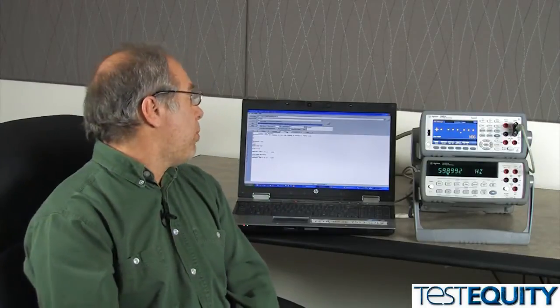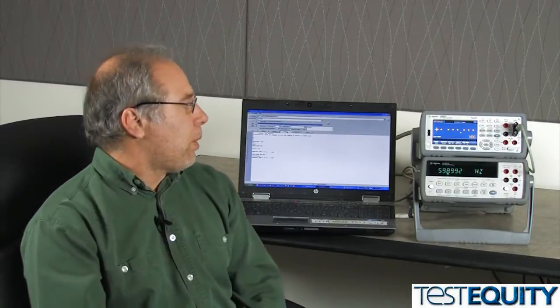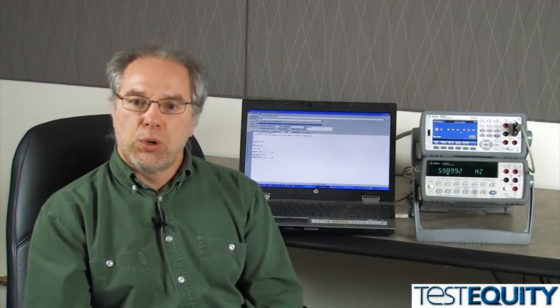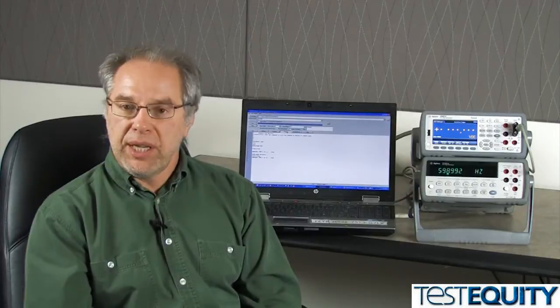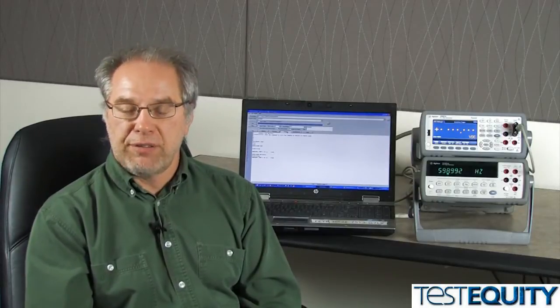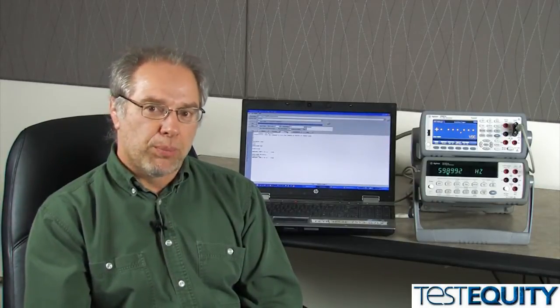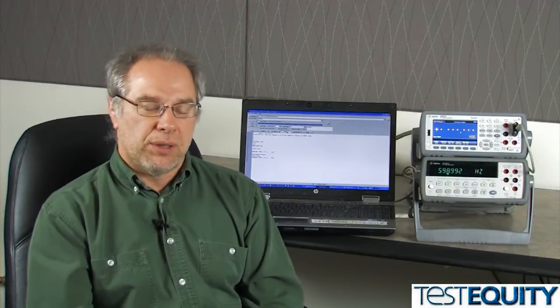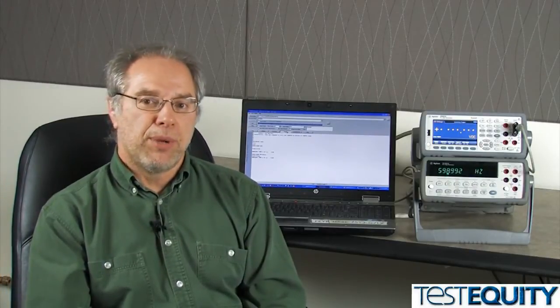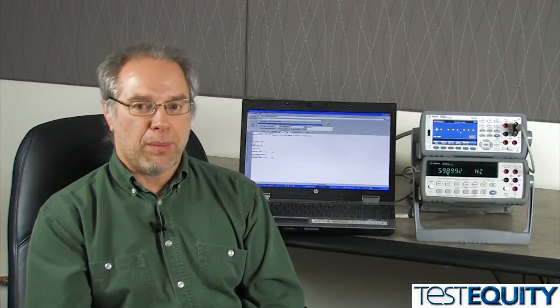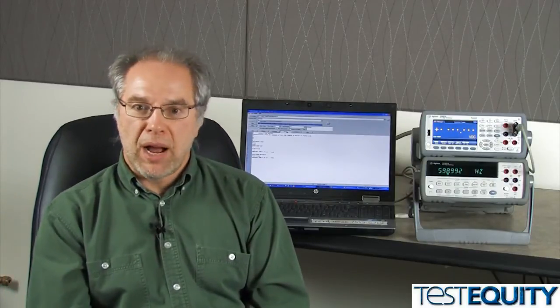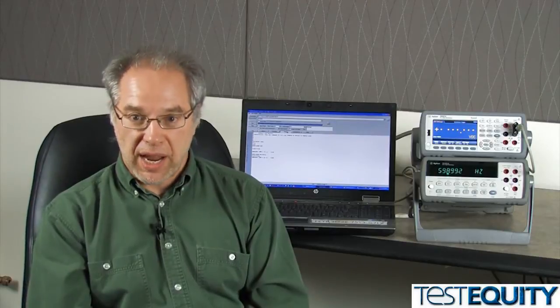So what I'm going to do here is run a little program that will query the new 34461A. It'll come back and tell me its identification, and then I will program the DMM to emulate the 34401A, and the IDN from after programming it will now be the 34401A.